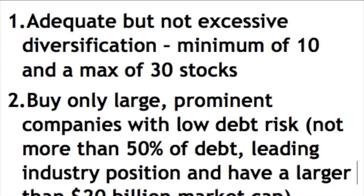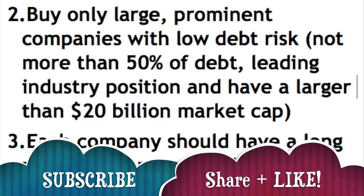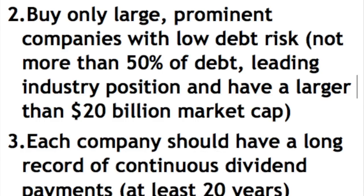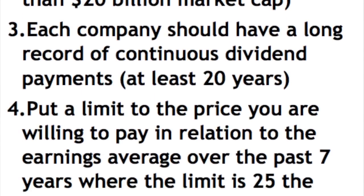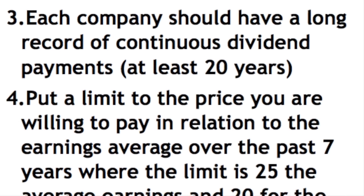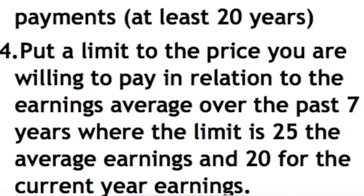Graham gives four rules that, if followed, mean we should have no fear when investing in stocks, always with the proper portfolio allocation. First, adequate but not excessive diversification — a minimum of 10 stocks and a maximum of 30. Buy only large, prominent companies with low debt and risk, not more than 50% debt, with a leading industry position and a big moat, and a market cap larger than $20 billion. Each company should have a long record of continuous dividend payments of at least 20 years, and you should limit the price you pay relative to earnings averaged over the past seven years — a limit of 25x average earnings and 20x current earnings.